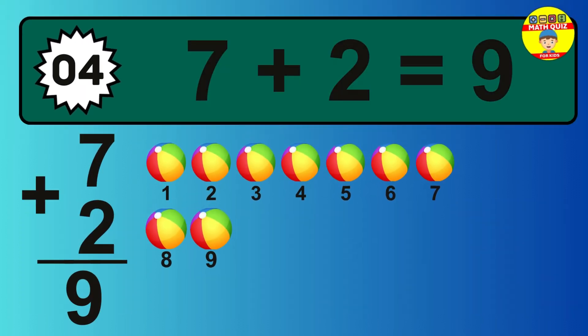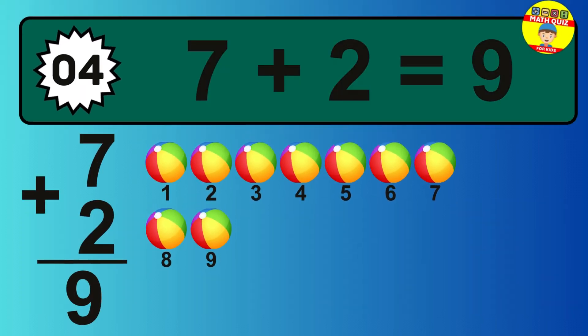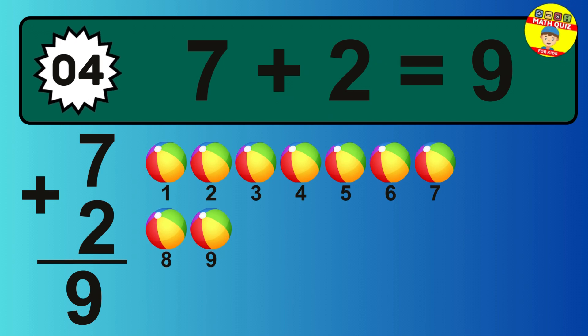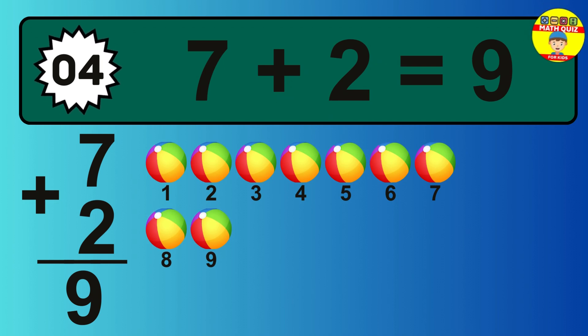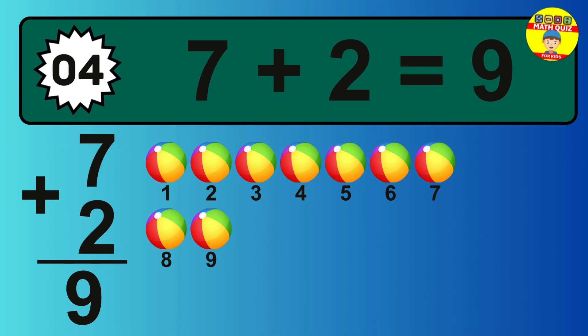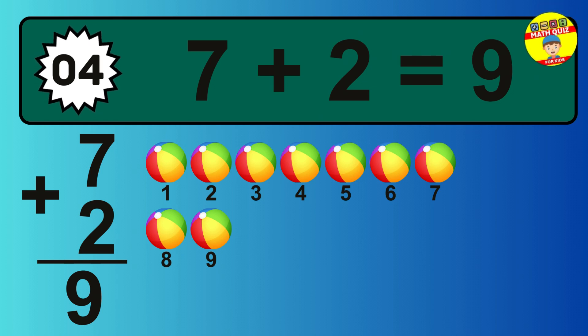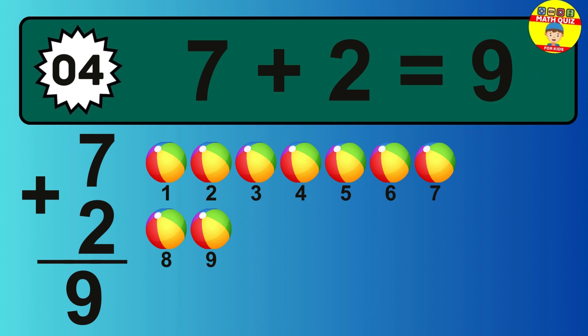So the answer is 7 plus 2 is 9. Let's count it: 1, 2, 3, 4, 5, 6, 7, 8, 9.